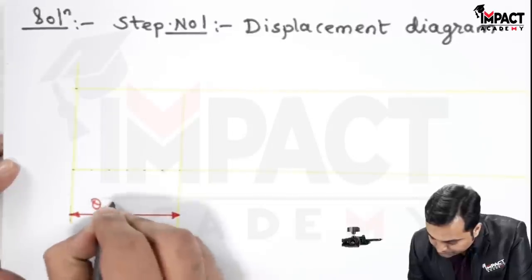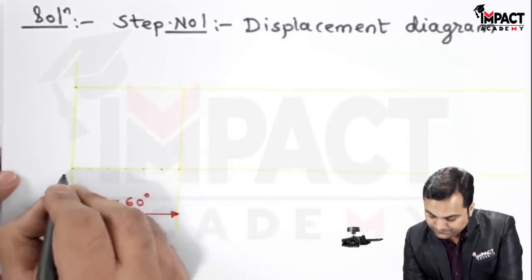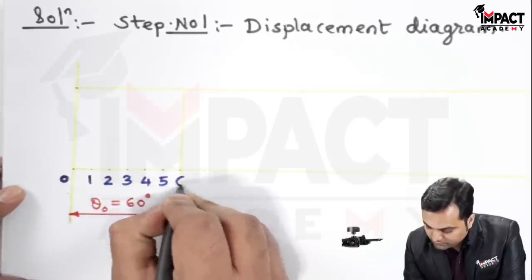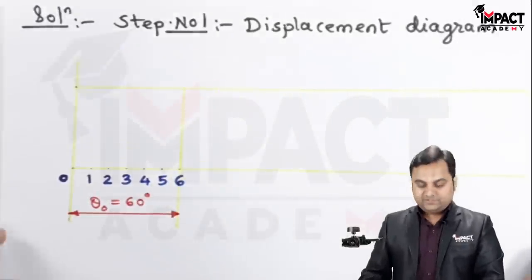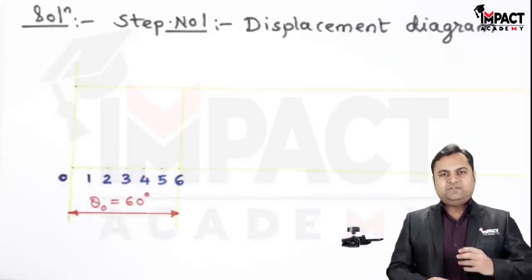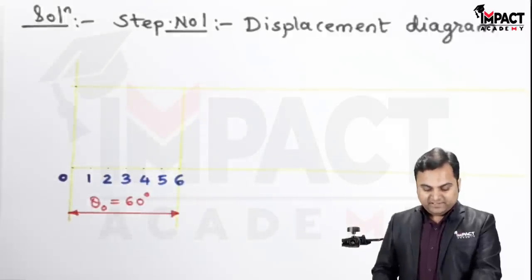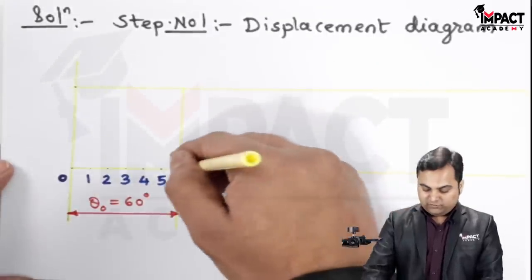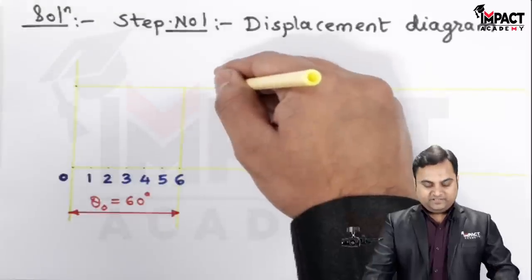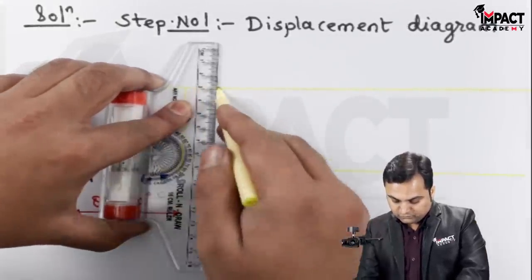This is the outstroke of 60 degrees divided into 6 equal parts, giving notations 0 through 6. Then there is a dwell of 45 degrees. The dwell need not be divided because when the cam rotates during the dwell period the follower remains at its position. When the outstroke completes, the follower covers maximum distance of 6 cm, and during the next 45 degrees of cam rotation the follower stays at the same position — just take an approximate distance to mark the dwell.